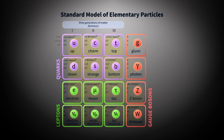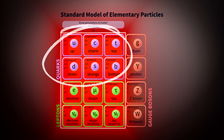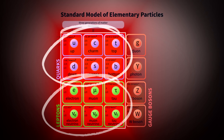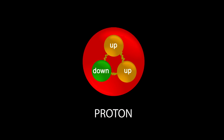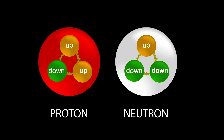The standard model consists of 12 elementary particles known as fermions. The fermions are six quarks and six leptons. All non-fundamental particles are made of these elementary particles. For example, a proton is made of two up and one down quark. A neutron is made of one up quark and two down quarks.